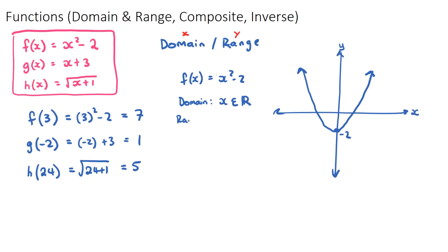For the range, we look at the possible y values. The function goes up forever on both sides, but it only goes down as far as negative two before coming back up. So the range is all y values greater than or equal to negative two — we write y is greater than or equal to negative two.